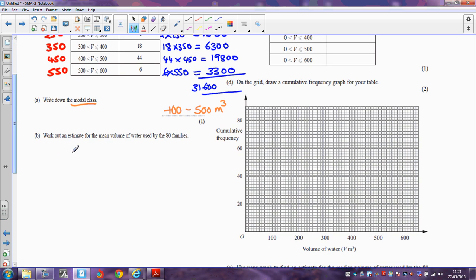Now if we want to find the mean, the mean is going to be the total amount of water used, which is the 31,600, divided by the number of families, which in this case is 80, and that comes out as 395 cubic metres.